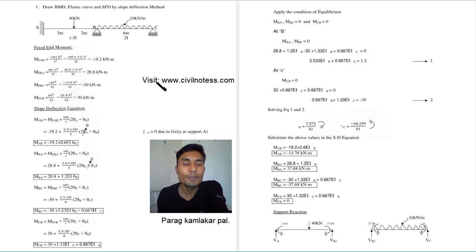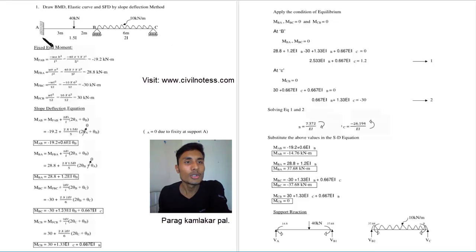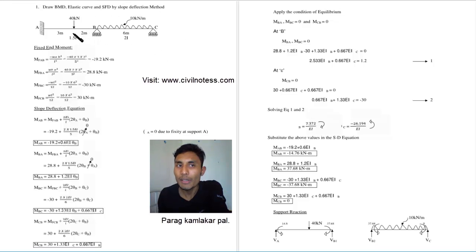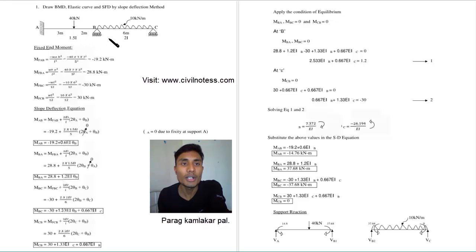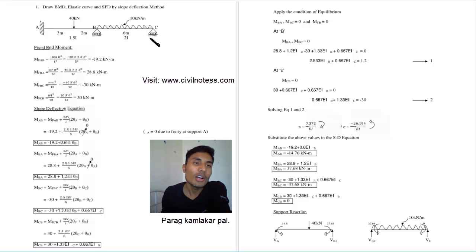We have a beam with a fixed support at point A and hinge supports at points B and C. This numerical consists of a point load at 3 meter distance in span AB, and a uniformly distributed load of 10 kilonewton per meter over span BC which has a 6 meter distance.